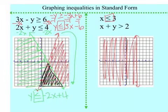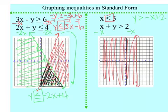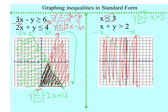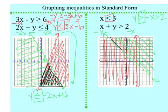I can go ahead and graph my second equation. The y is not alone yet, so I need to get rid of that x by subtracting x. I'm left with y is greater than a negative x plus 2. Now the y is alone and I can graph that — start at 2. Negative x tells me go down 1 over 1. This symbol tells me it's a dotted line, and greater than tells me to shade up, so I'm going to shade everything on this side. The solution region is where there's both the red and the green.